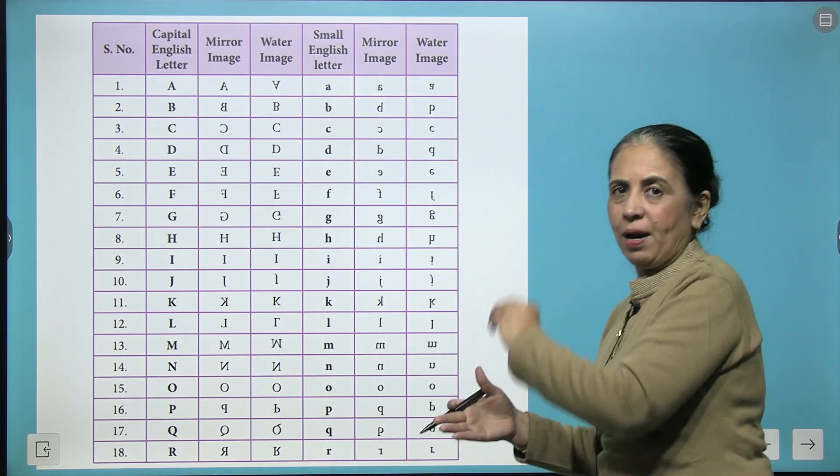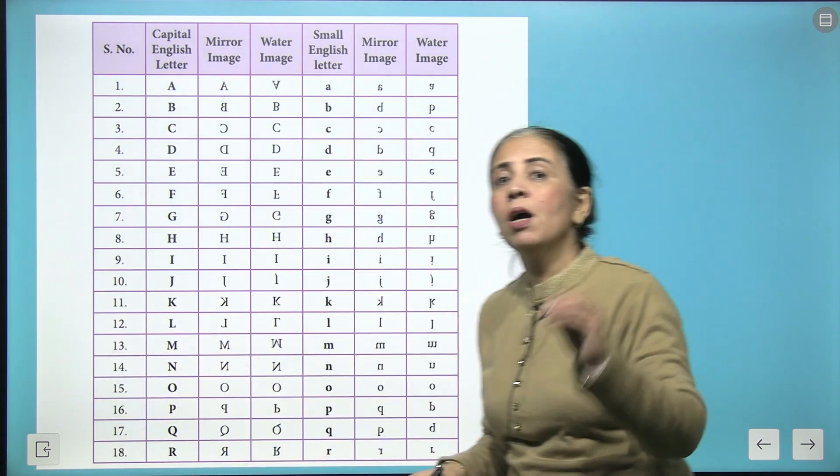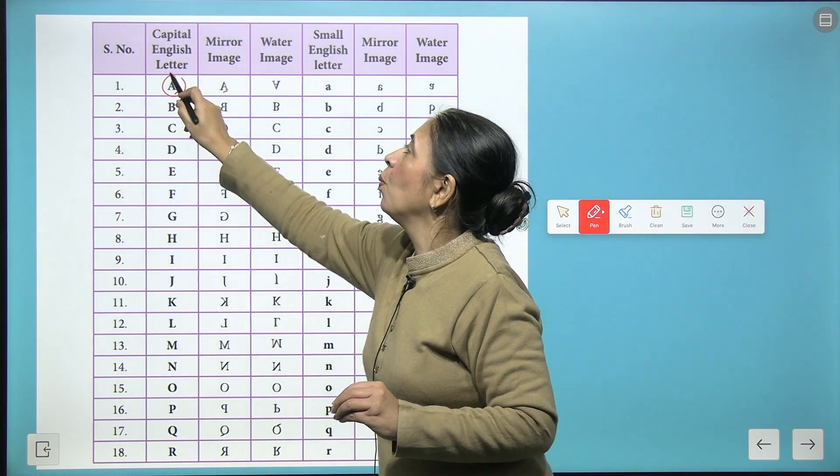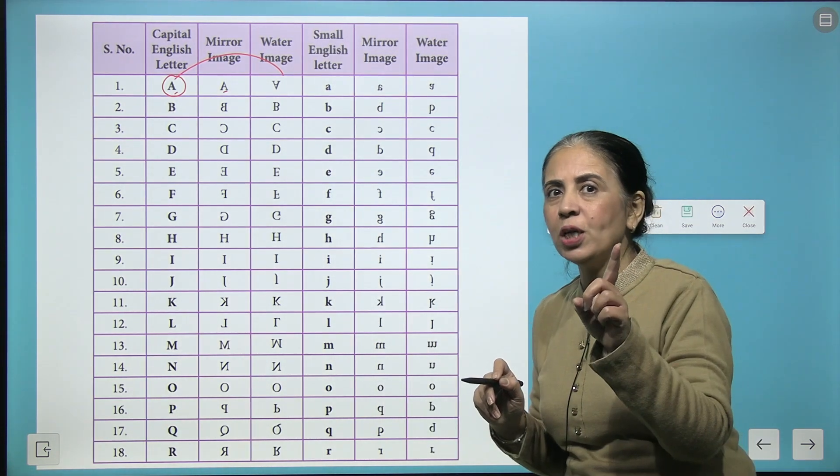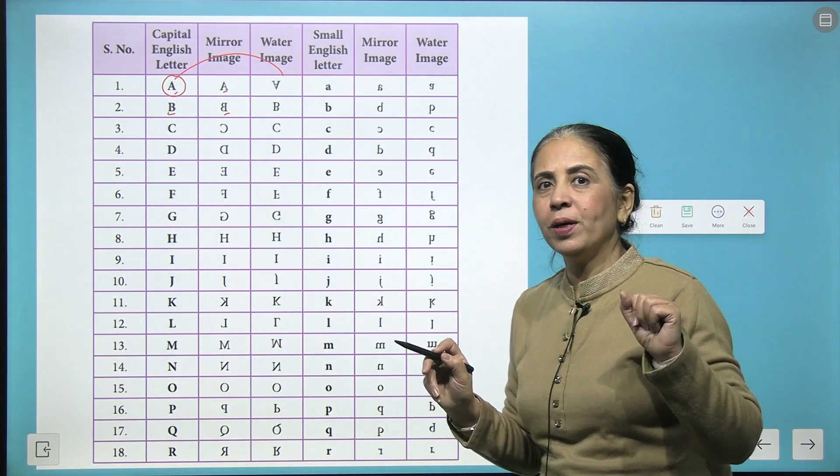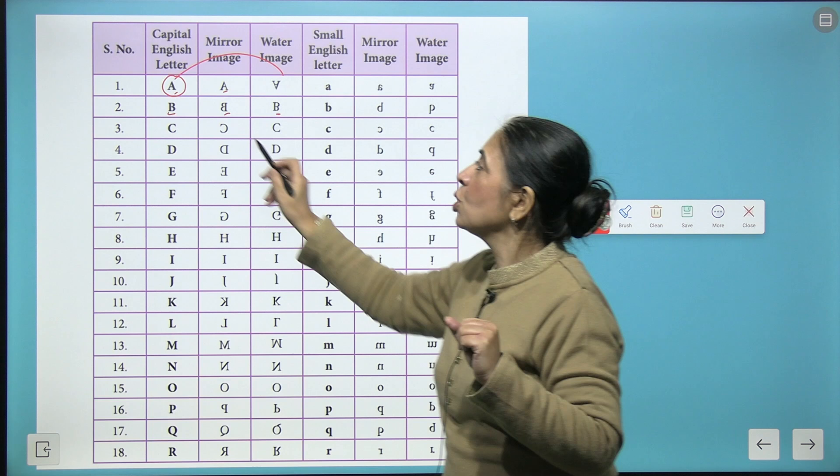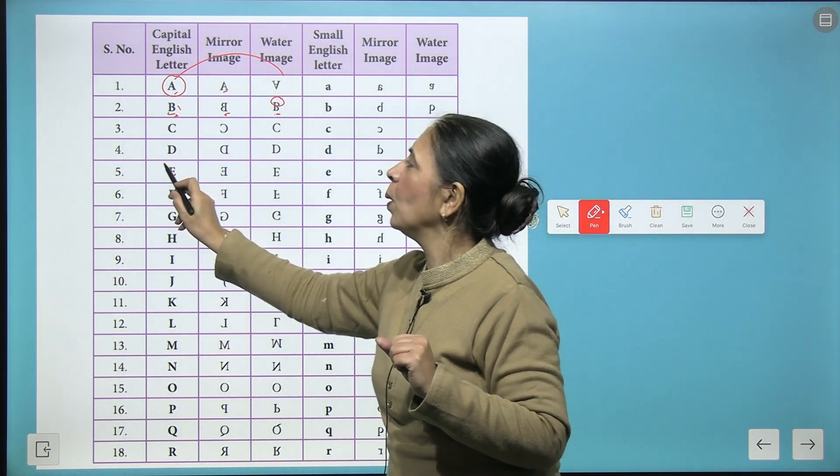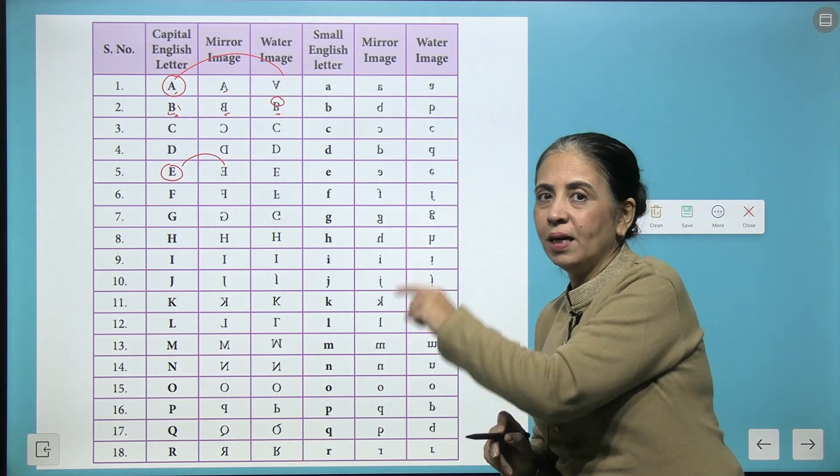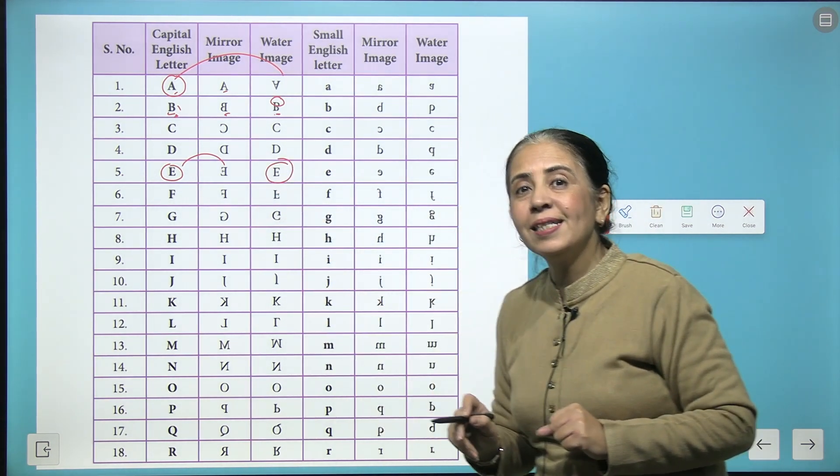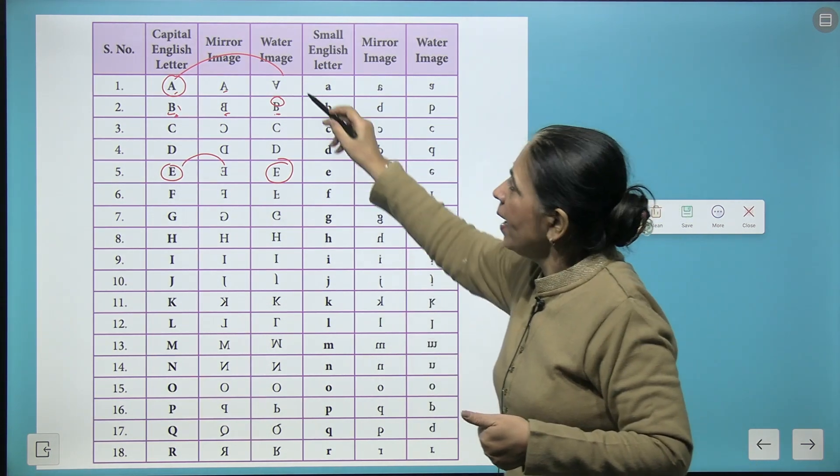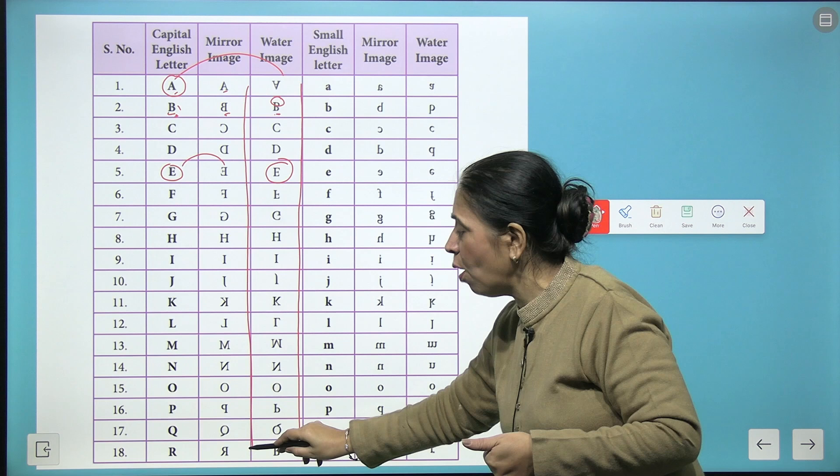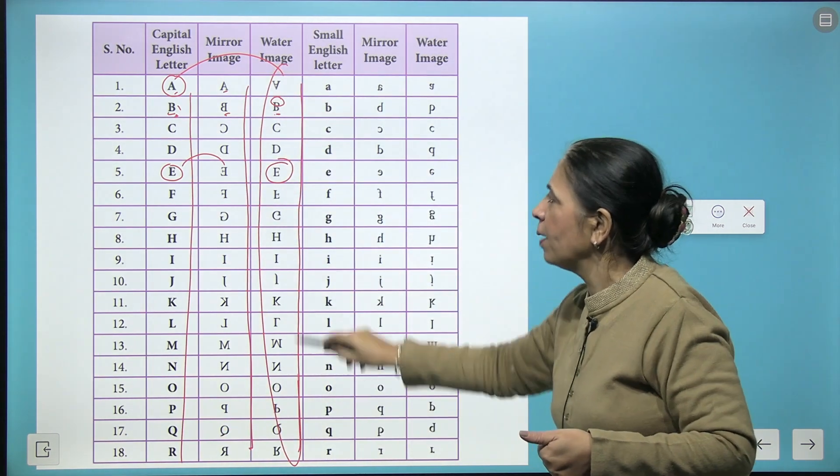Now we have the water image and mirror images of all the alphabets from A to Z here. See, here this is A, mirror image - it is laterally inverted, but the water image is upside down. Don't forget the logic, upside down. This is B, laterally inverted, and this is the water image. So the bottom bigger part appears on the top and the top small part appears on the bottom. Let's see how E looks - it is laterally inverted, the mirror image, and this one is exactly same. Beautiful! So this is a water image.